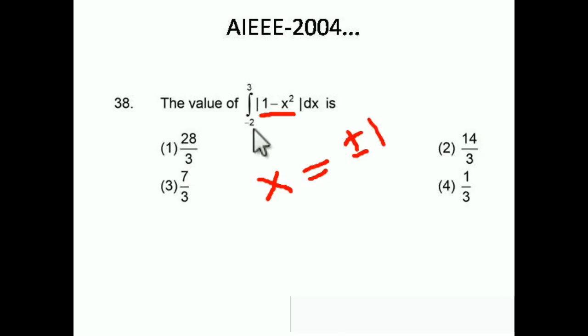We need to separate the integral at these critical points. Since our limit is from −2 to 3, we split it as: −2 to −1, then −1 to 1, then 1 to 3. We then check the sign of 1 − x² in each interval.